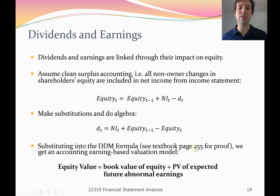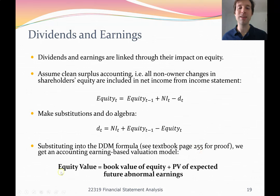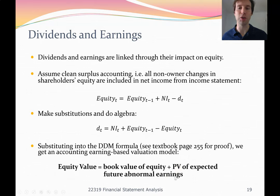If we substitute this clean surplus relationship into the dividend discount model and rearrange, what we get is the residual income model. The textbook has the proof — I don't require you to know it, but you can look at the substitution if interested. We end up with a formula saying the equity value of a company equals their book value of equity plus the present value of expected future abnormal earnings.